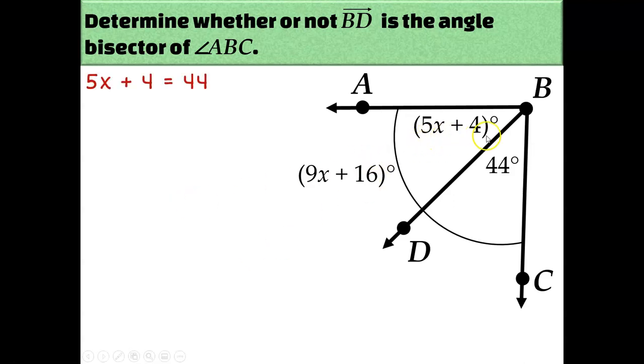So I'm going to set up 5x plus 4 equal to 44. Let's see what we get. So I'm going to subtract 4 from both sides and divide by 5, and I get x equals 8. Well, in order for BD to be the angle bisector, that must mean that angle ABD is also 44 degrees. So if I plug 8 into this algebraic expression, do I get 44? Well, 5 times 8 is 40. And then add 4 to it, yeah, I get 44.